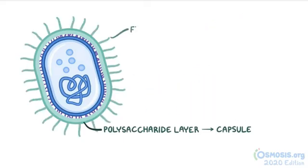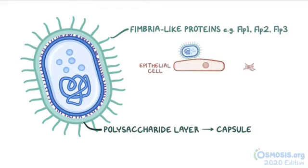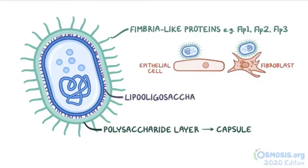On the capsule, there are fimbria-like proteins such as FLP1, FLP2, and FLP3, which it uses to attach to subcutaneous epithelial cells and fibroblasts. Underneath the capsule, there's an outer membrane which consists of lipooligosaccharide, or LOS, which is also involved in cell adhesion.